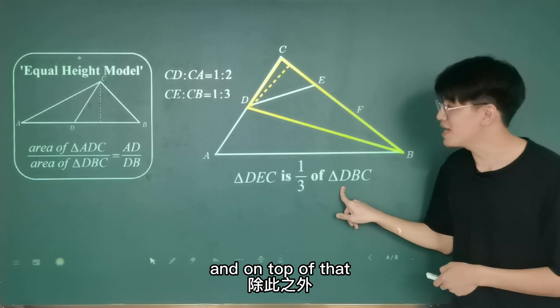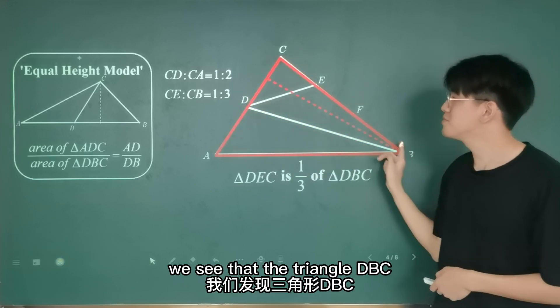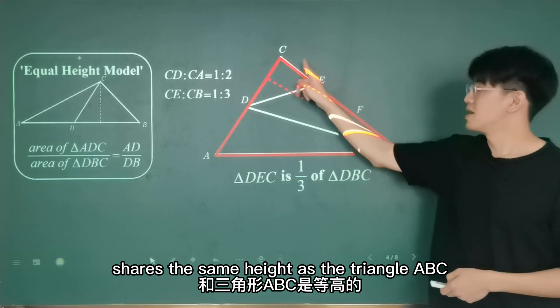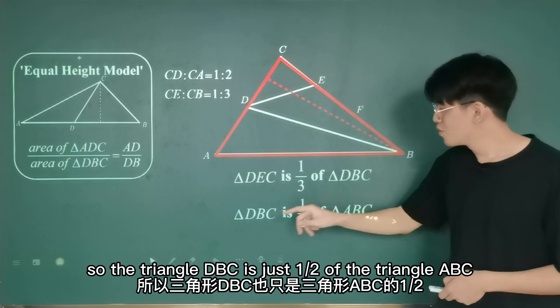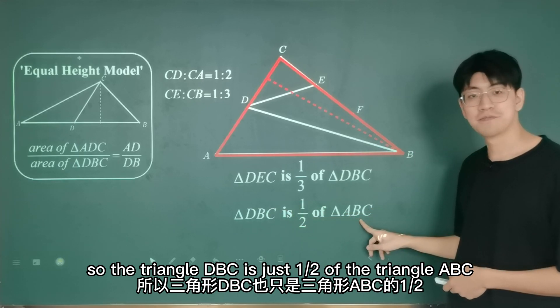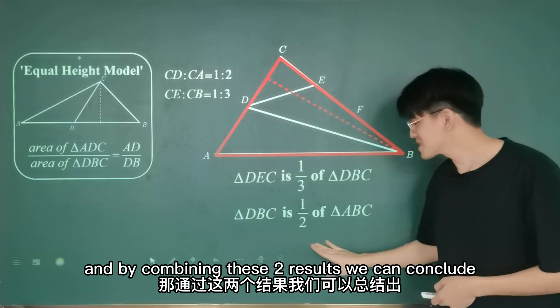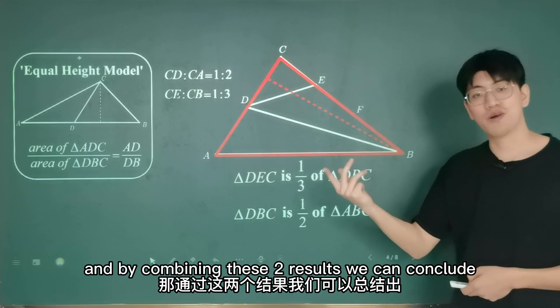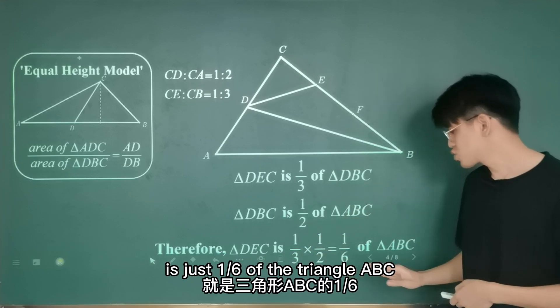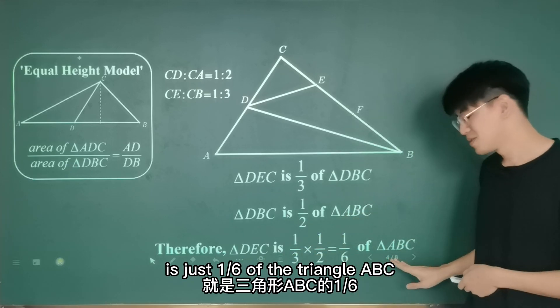And on top of that, we see that triangle DBC shares the same height as triangle ABC. So triangle DBC is just one half of triangle ABC. And by combining these two results, we can conclude that triangle DEC is just one-sixth of triangle ABC.